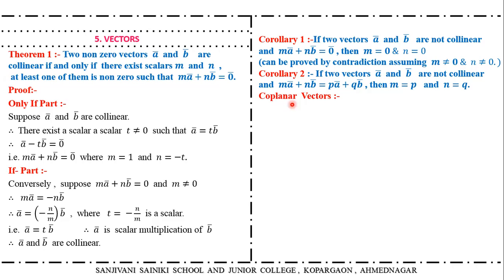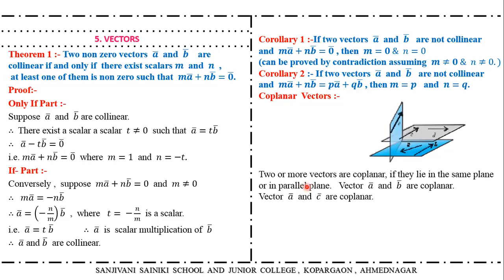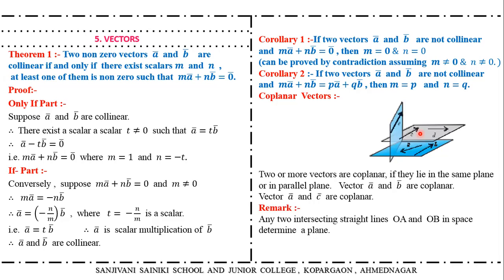Now what is meant by coplanar vectors? It is also important. Coplanar: two or more vectors are coplanar if they lie in the same plane or in parallel planes. Vectors A bar and B bar are coplanar because they both lie in the same plane. A bar and C bar are coplanar because they lie in parallel planes. Any two intersecting straight lines in space determine a plane.